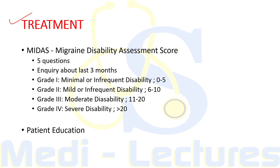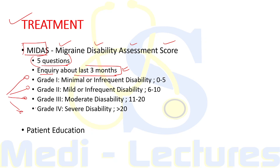The MIDAS — Migraine Disability Assessment Score — comprises five questions regarding school, work, social life, and family activities over the last three months. There are four grades of disability: grade 1 is minimal or infrequent disability with a score of 0 to 5; grade 2 is mild or infrequent with 6 to 10; grade 3 is moderate disability with 11 to 20; and grade 4 is severe disability with a score greater than 20.